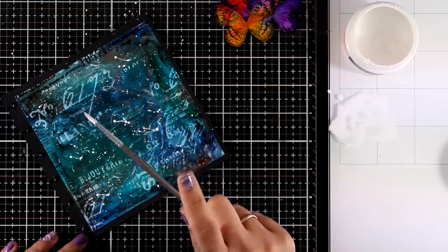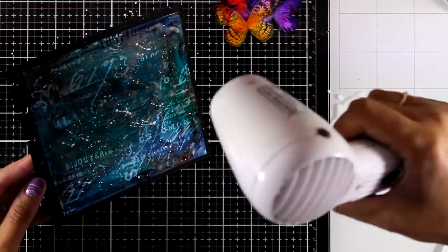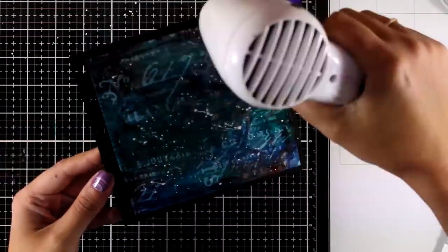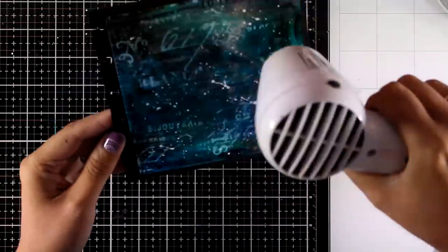So here I am with some thin watered down gesso and a very thin brush. I'm using my heat gun just to make sure that those splashes are completely dry before I do the next step.